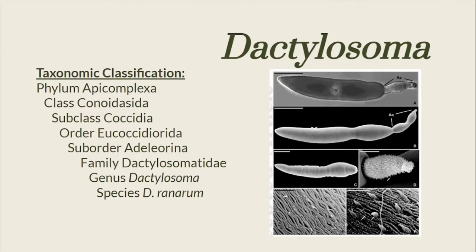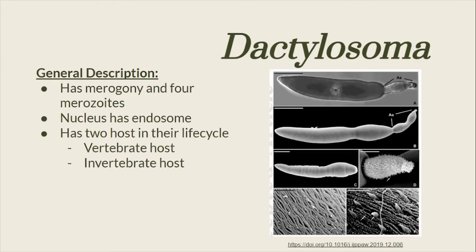Here is the taxonomic classification of the genus Dactylosoma. It has merogony and four merozoites, a nucleus as an endosome, and has two hosts in their life cycle: a vertebrate and an invertebrate host.